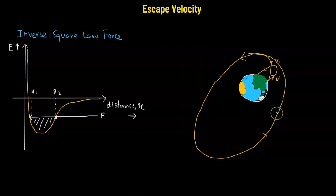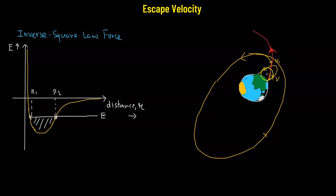Now, what will be the minimum amount of velocity required by the particle in order to escape the attractive potential of the Earth, such that the object can move freely and away from the Earth's surface, never to return back? This particular velocity is referred to as the escape velocity.